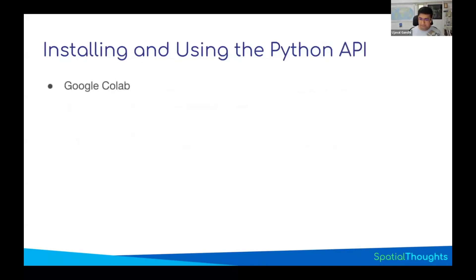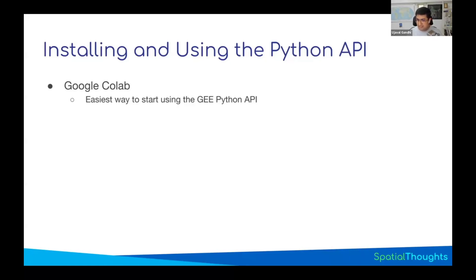The easiest way to use the Python API is using Google Colab. Colab is a hosted Jupyter Notebook platform that Google offers free of cost. You can go to the website and get an environment where you can run Python code. It comes pre-installed with the Earth Engine API, so you don't have to install anything. This is the closest you can get to a code editor experience — just go to a website and start using the Earth Engine API.